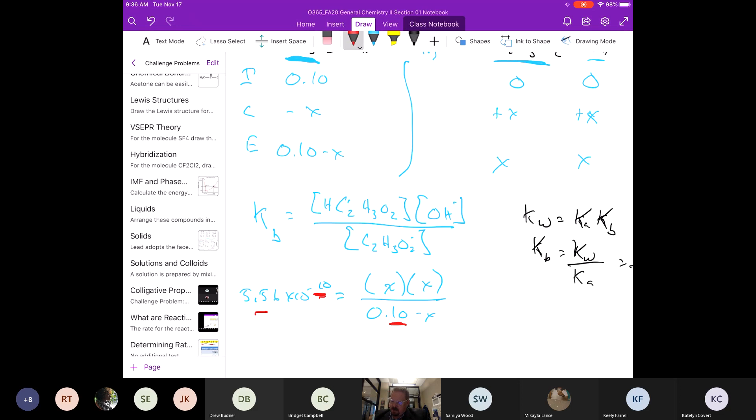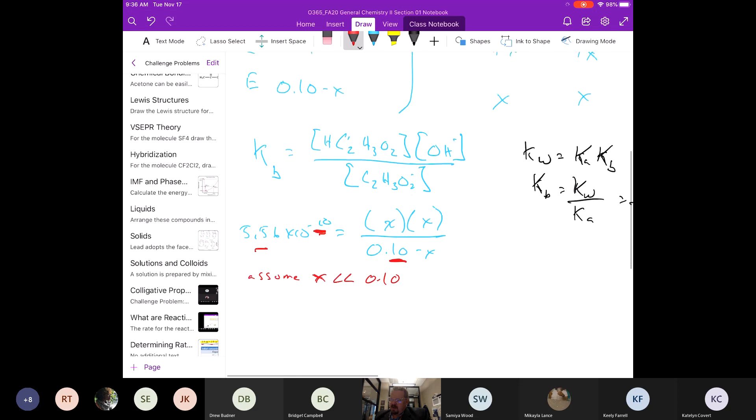So what I'm going to say is that I'm going to assume that X is much, much smaller than the 0.1. And that means that when we do this subtraction, when we take 0.1 minus X, our answer is going to be essentially 0.1.